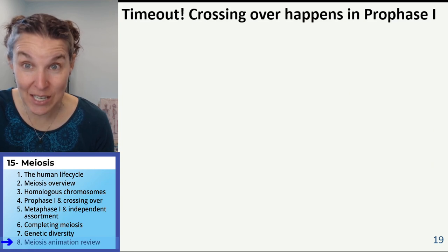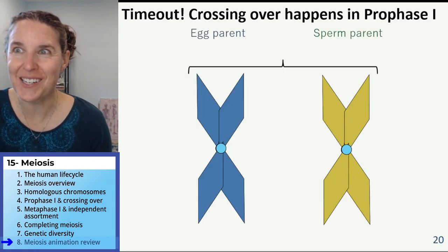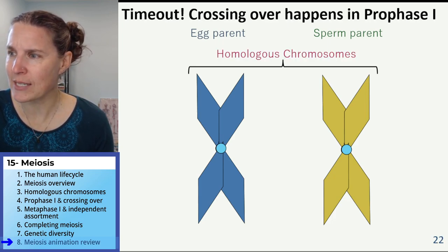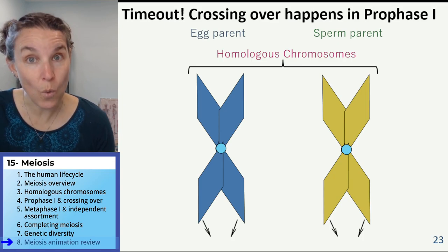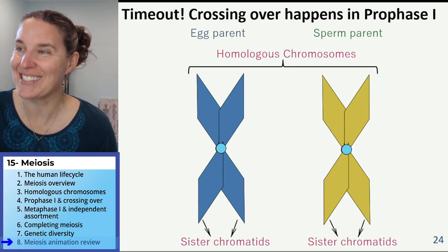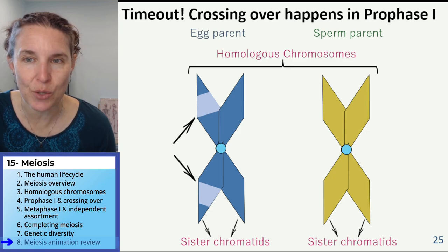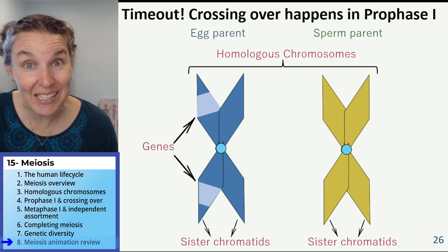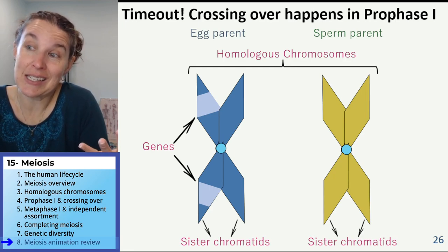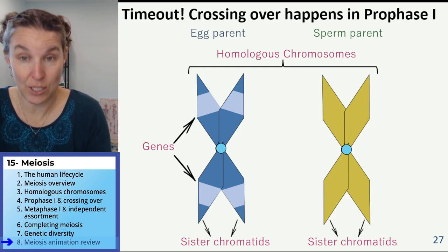We're going to do a little timeout to see what crossing over is. What I've shown you here are homologous chromosomes. What are those things I'm pointing to? Those are sister chromatids. What are these other things I'm pointing to? Those are genes. Every chromosome has genes, and sister chromatids have identical genes to each other.